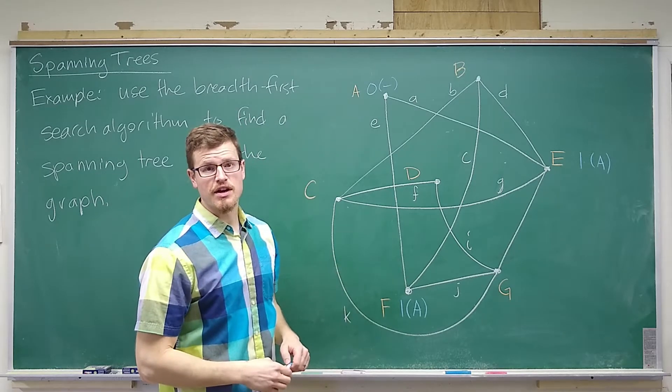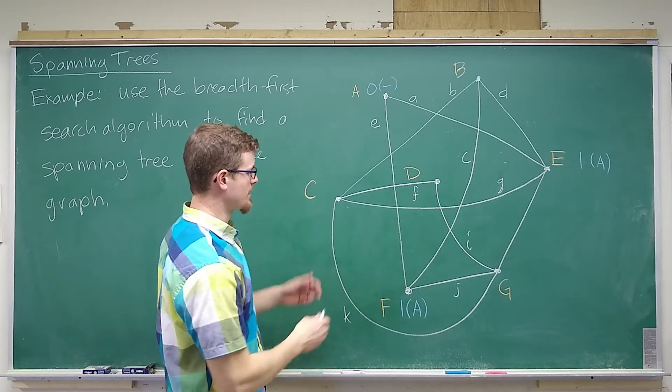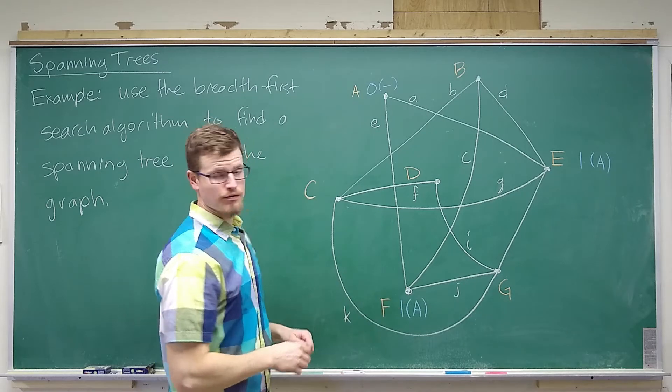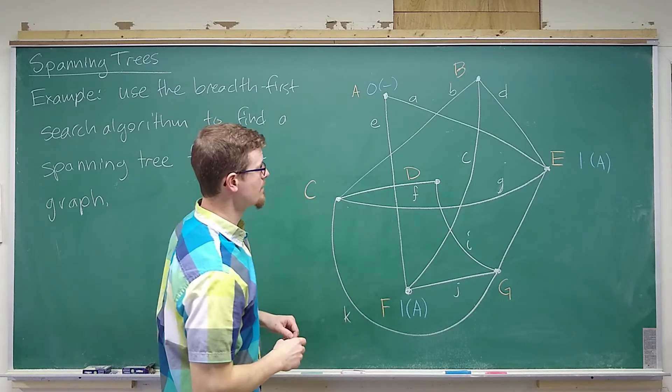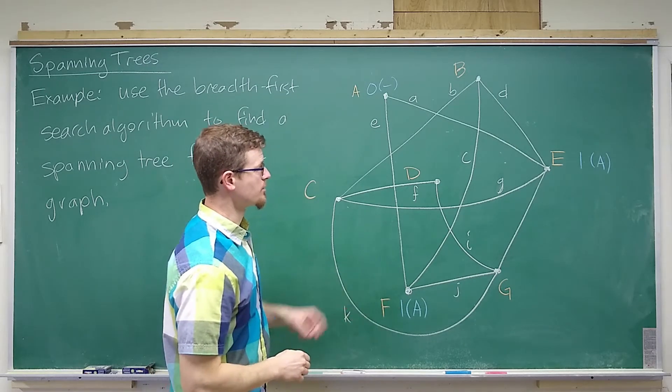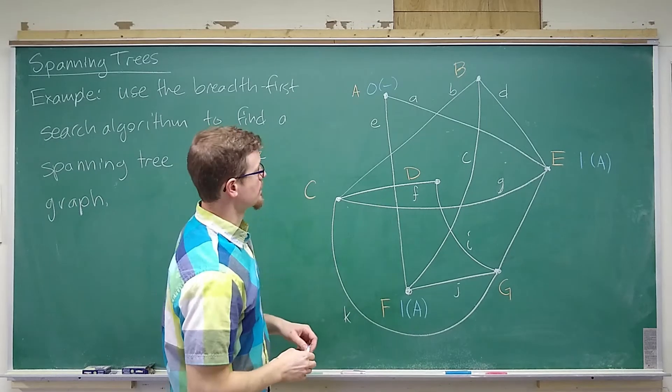There are no other vertices that are adjacent to A, so we move on to look at the things that are a distance of 2 away from A. That is the things that are adjacent to F and E.